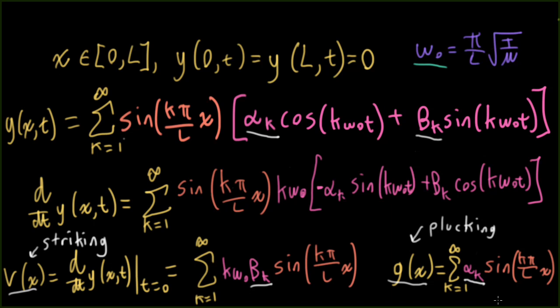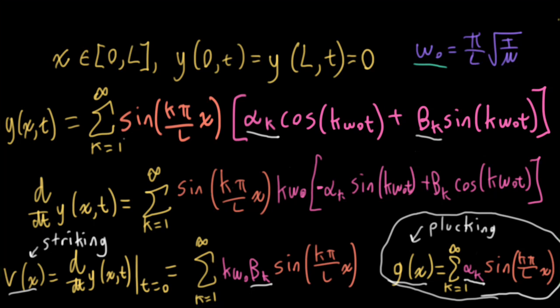The thing to note here is that this looks an awful lot like a Fourier series. And the reason it looks an awful lot like a Fourier series is because it's a Fourier series. It just happens to have a very particular form.